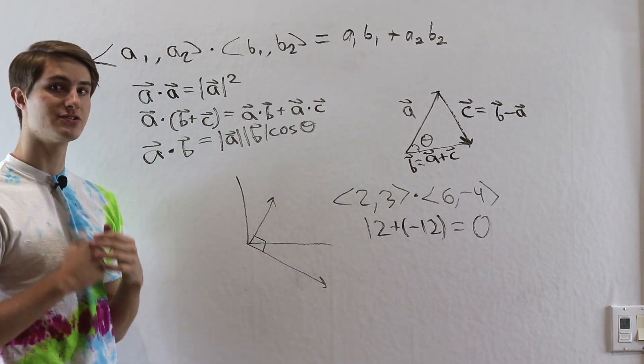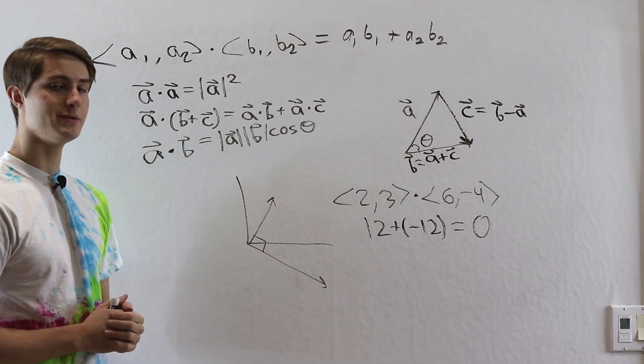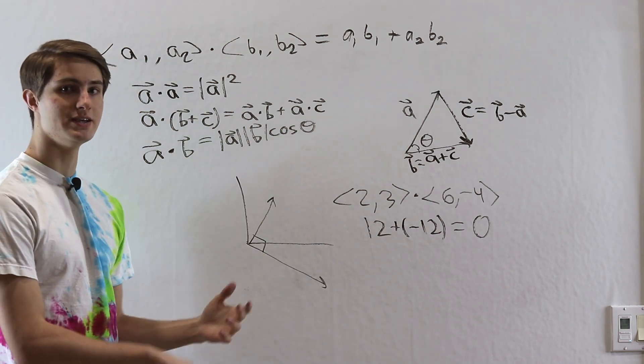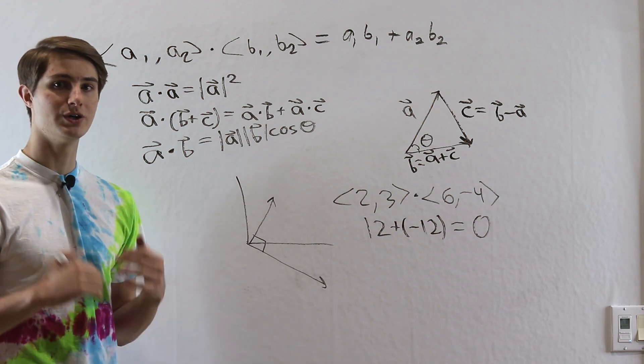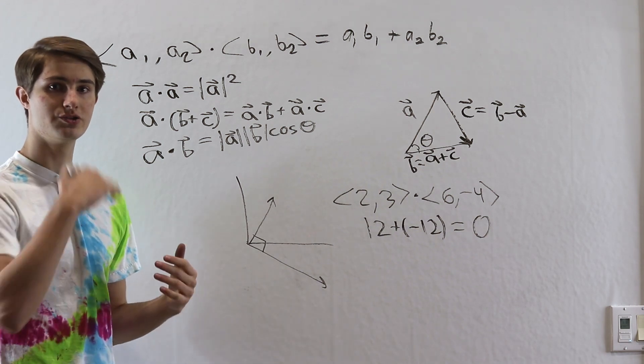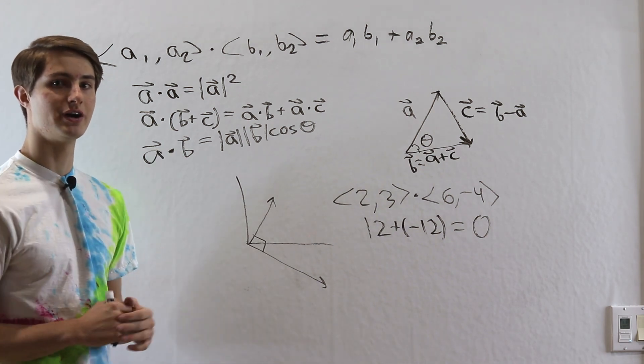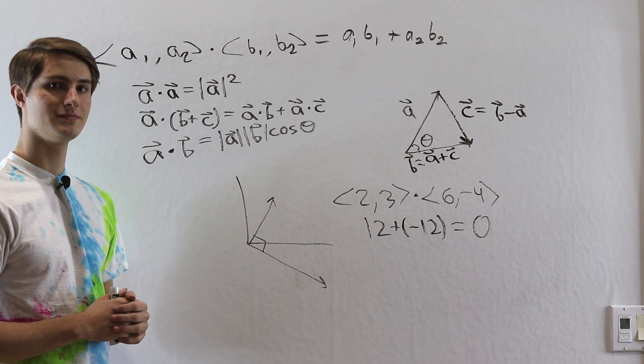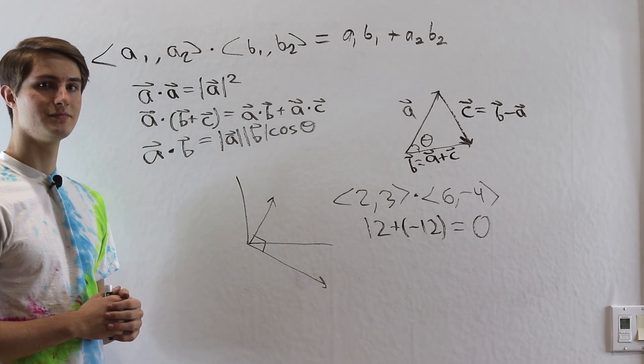These are the fundamental properties of dot products, especially the identity relating to the cosine of the angle between two vectors. The dot product has very cool applications when we start talking about equations of planes, as well as other topics further down the road.